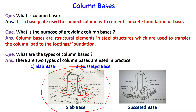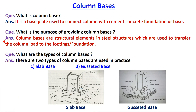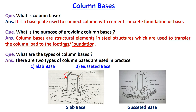A steel plate or a base plate which is used to connect the steel column with the concrete base or concrete foundation is called a column base. The purpose of providing the column base is to transfer the column load to the footing or foundation. You know that a column is subjected to axial force. To transfer this axial force to the concrete foundation, this base plate is designed.